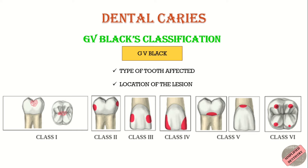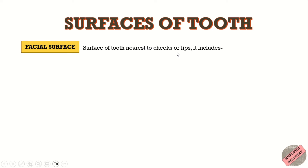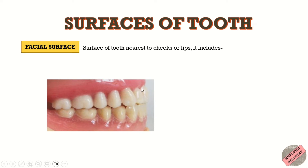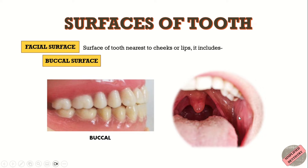First is the facial surface — this is the surface of a tooth that is directed towards the face, that is towards the cheeks or lips. For posterior teeth, the surface directed towards the face means the surface nearest to the cheeks. The word buccal literally means cheek, so the surface that touches the cheek, or the surface on the cheek side of the jaw, is known as the buccal surface.